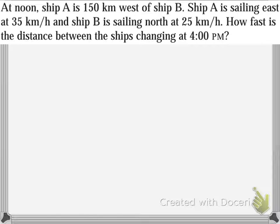At noon, ship A is 150 kilometers west of ship B. Ship A is sailing east at 35 kilometers per hour, and ship B is sailing north at 25 kilometers per hour. How fast is the distance between the ships changing at 4 p.m.? This is a pretty dense problem.